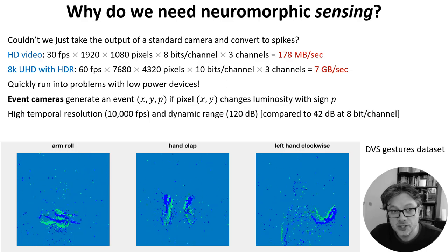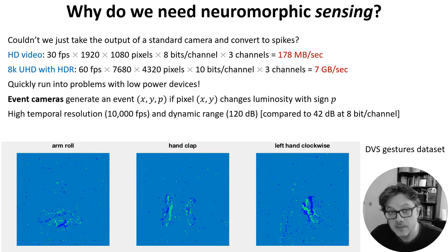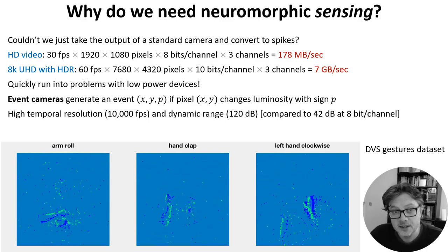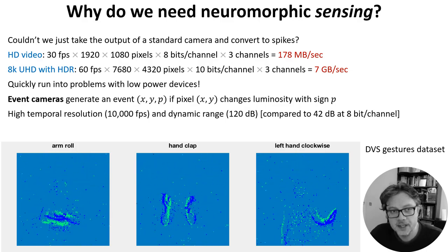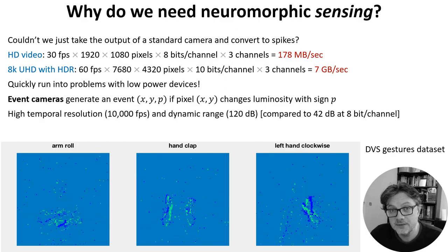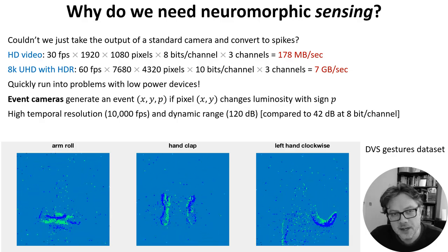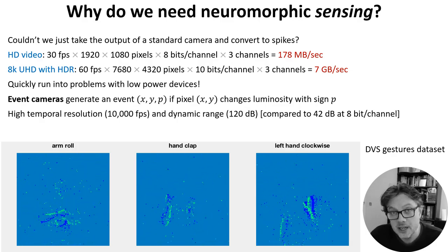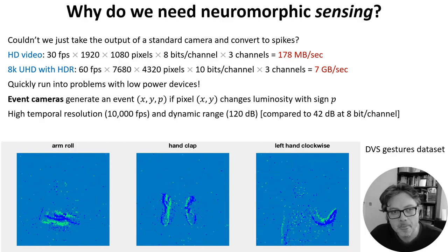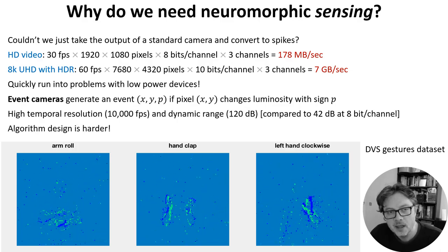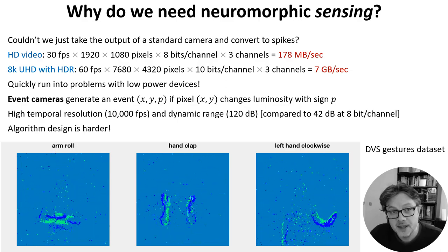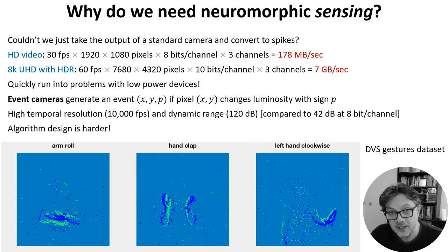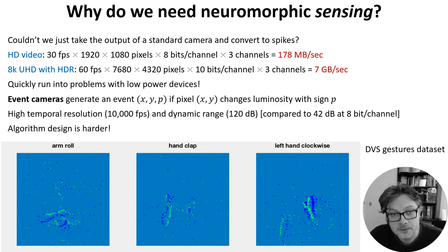In addition to hugely reducing the amount of data transfer needed, it also has another nice effect. Instead of running at 60 frames per second, we can run at the equivalent of thousands of frames per second with a much larger dynamic range. The downside is that the algorithm design is much harder, as we've seen throughout this course.